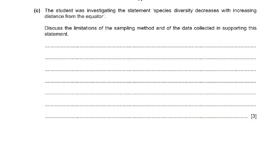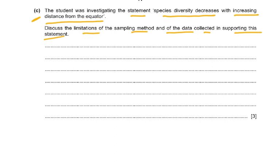Coming on to part C of the question: the student was investigating the statement that species diversity decreases with increasing distance from the equator. Discuss the limitations of the sampling method and of the data collected in supporting this statement. Limitations of the data include: only counts of bird species were used, which may not apply to all species; and we do not know the number of individuals of each species — the relative abundance of each species.